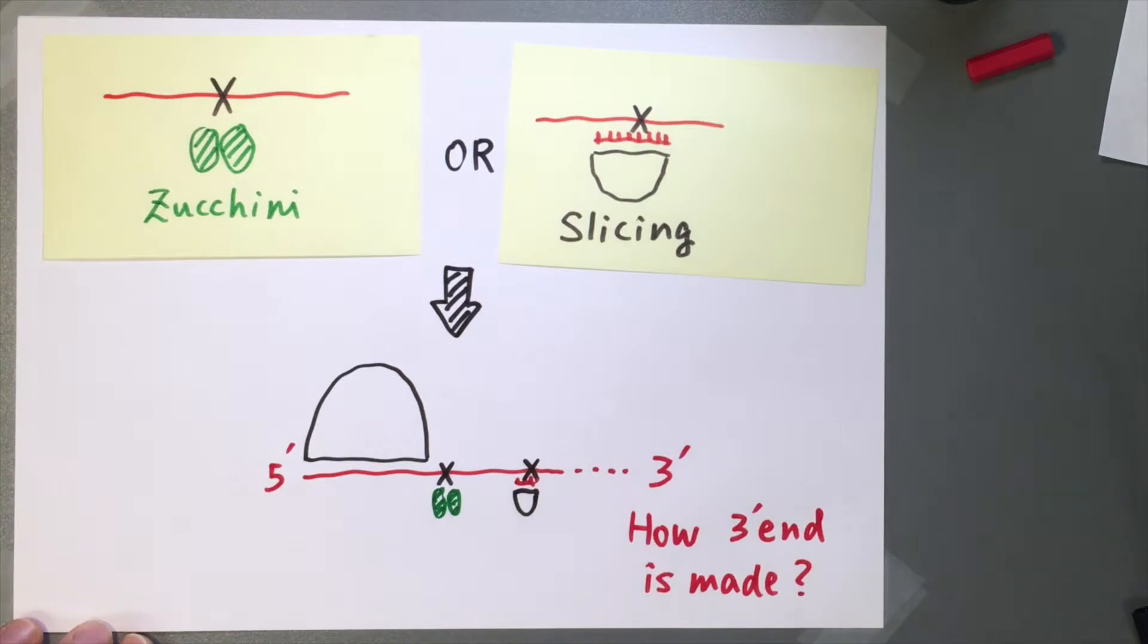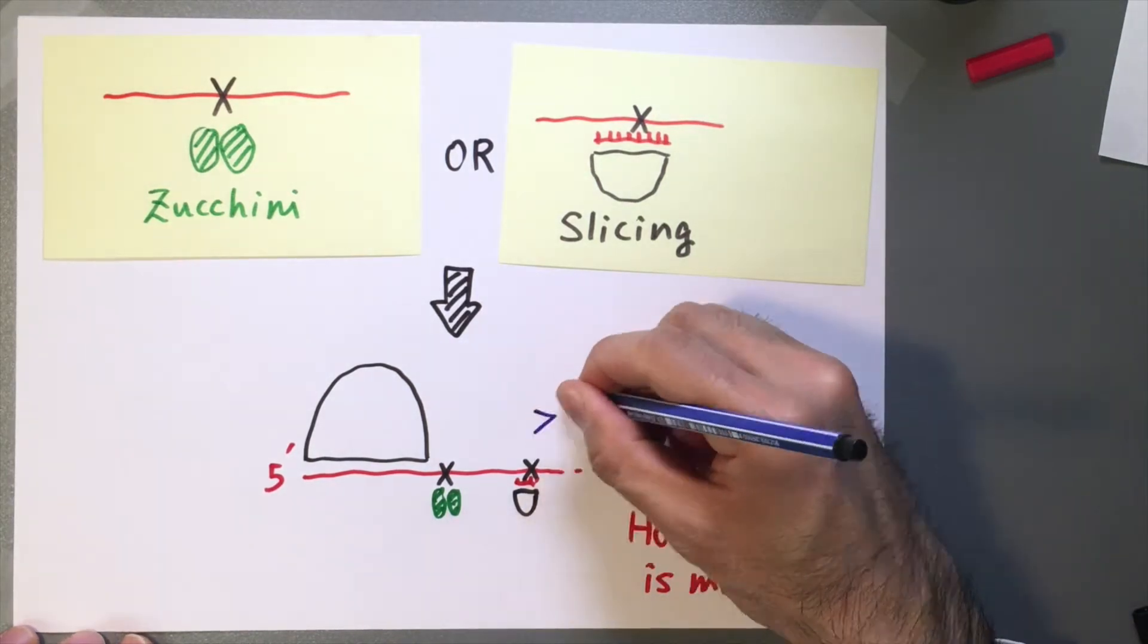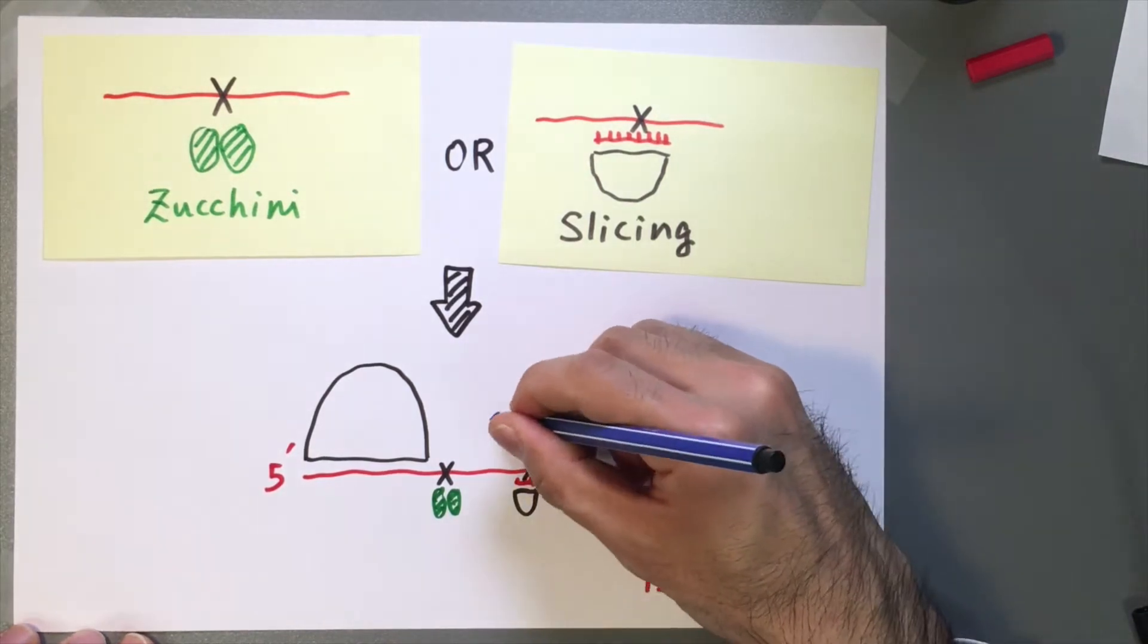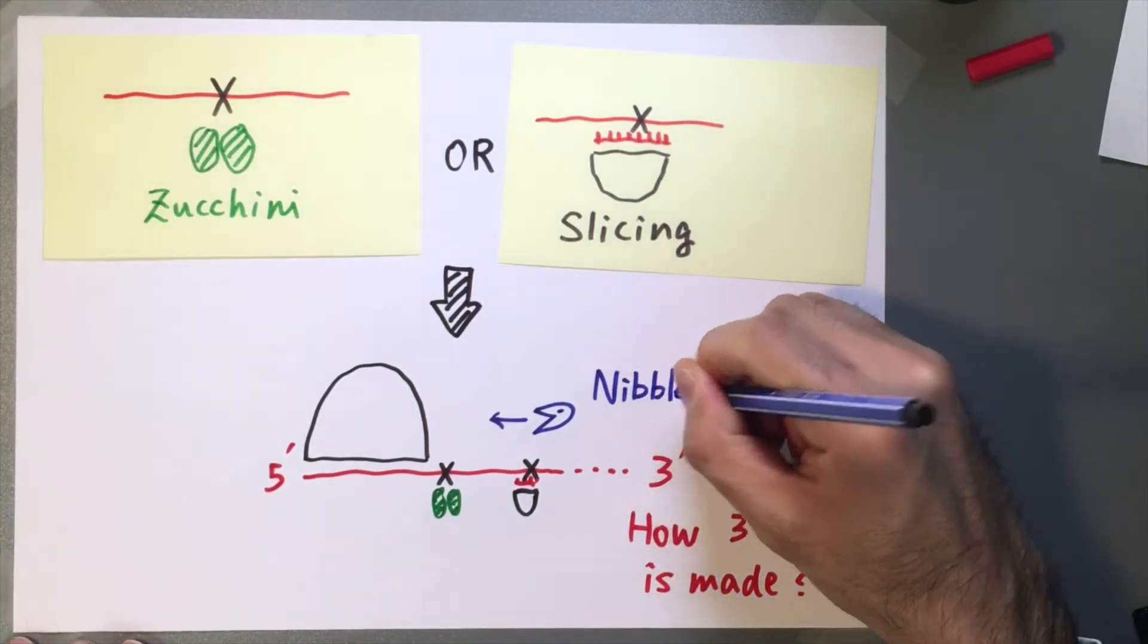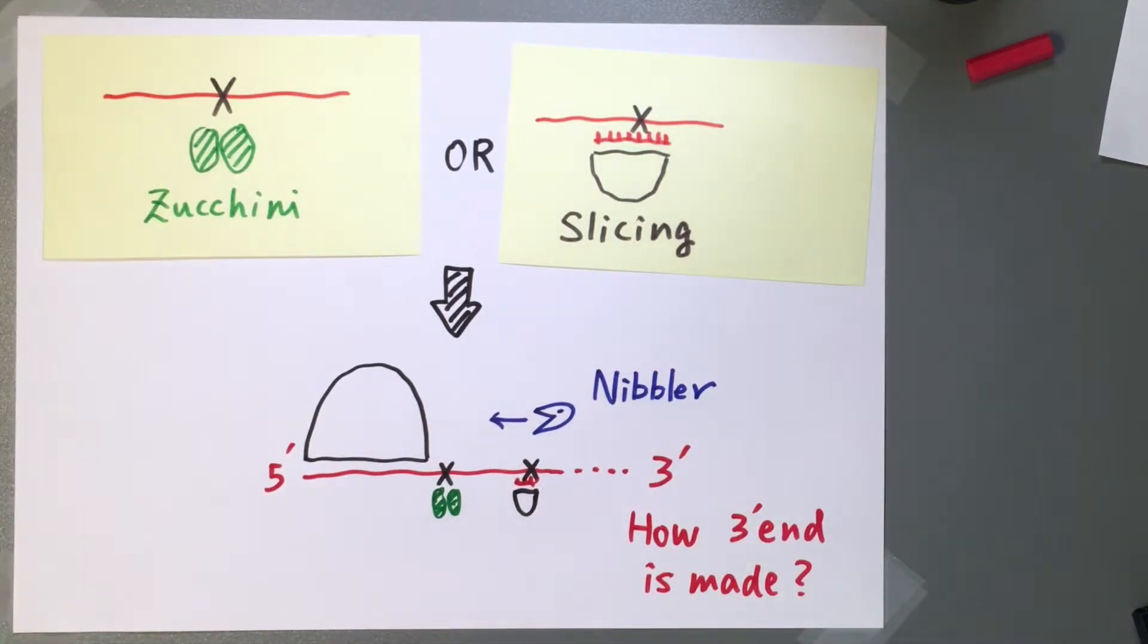We now show that the exoribonuclease Nibbler is the central enzyme that generates these piRNAs. Using genetics, high-throughput sequencing and piRNA biogenesis reporters, we show that Nibbler trims pre-piRNAs produced by Aubergine and Ago3 to their mature length.